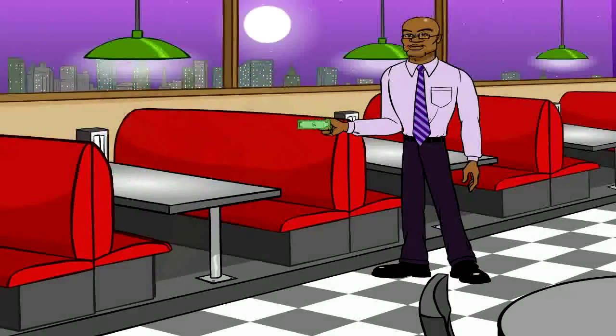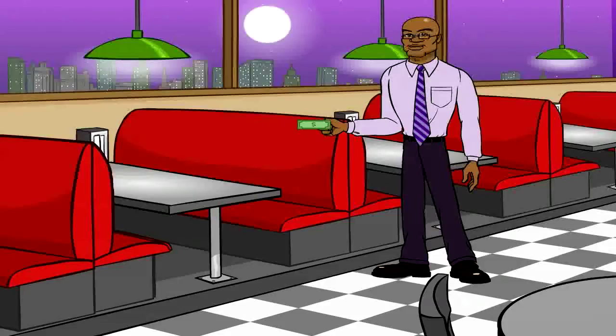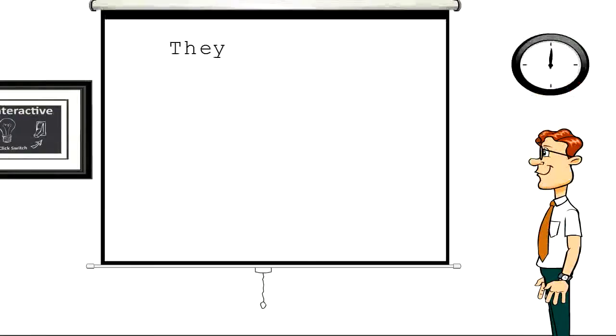Unfortunately, later that day the waiter works out that someone has robbed him of a dollar. He calculates the people actually paid nine dollars each when you consider the dollar he gave them back. Three times nine is 27. He kept two. 27 plus two equals 29. Where did the extra dollar go?